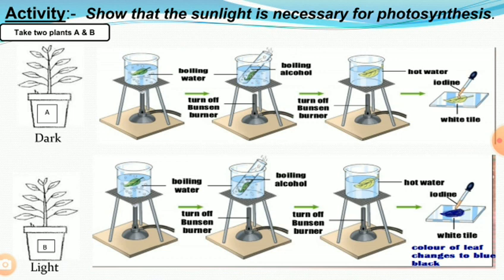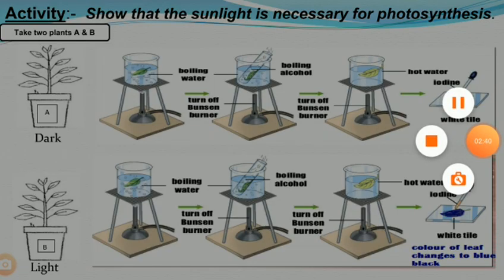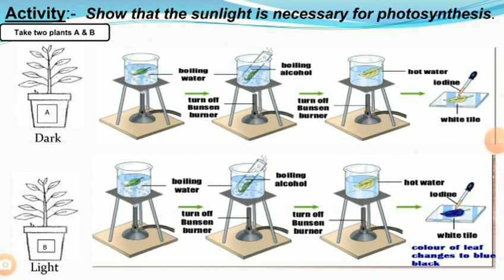There is an activity which shows that sunlight is necessary for photosynthesis. We take two plants, A and B. Plant A is kept in the dark and Plant B is kept in light. After 72 hours, one leaf is plucked from both plants, boiled in water, and then boiled in alcohol. The leaf is washed with hot water and a few drops of iodine solution are added. The color of the leaf changes to blue-black in case of Plant B, showing that it contains starch and photosynthesis has taken place.